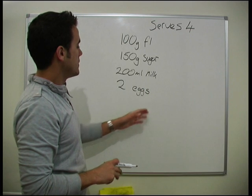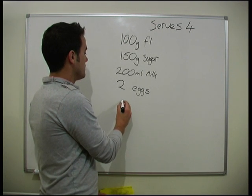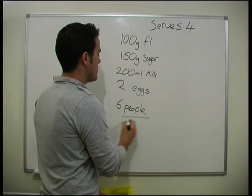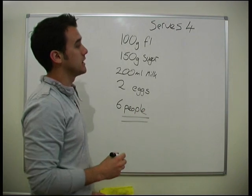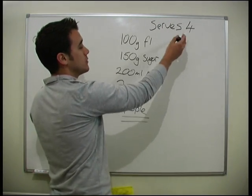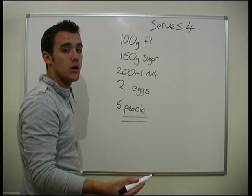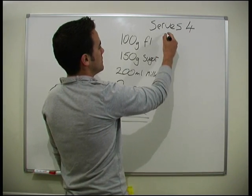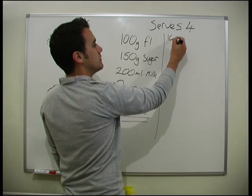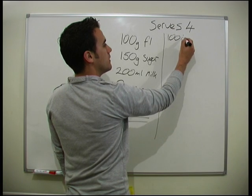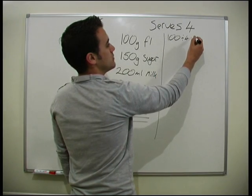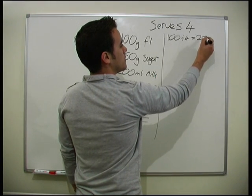So what we need to do is convert this, because we are actually cooking for 6 people. So how much of each ingredient do we need in order to make enough for 6 people? It's actually relatively straightforward. We need to get from 4 to 6. So what we need to do is work out how much we need to serve 1 person. So for 100 grams of flour, we need to do 100 divided by 4, which tells us how much we need for 1 person, which would be 25 grams.